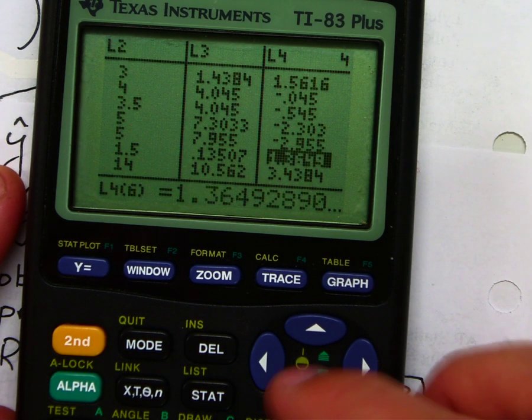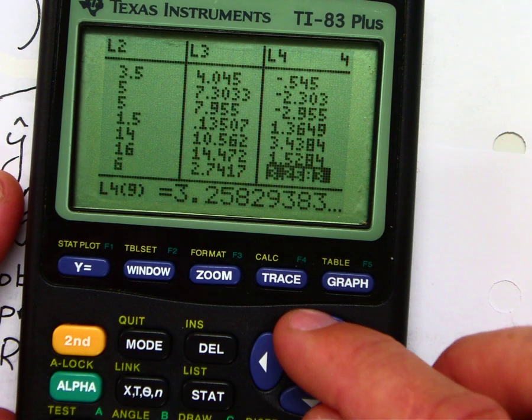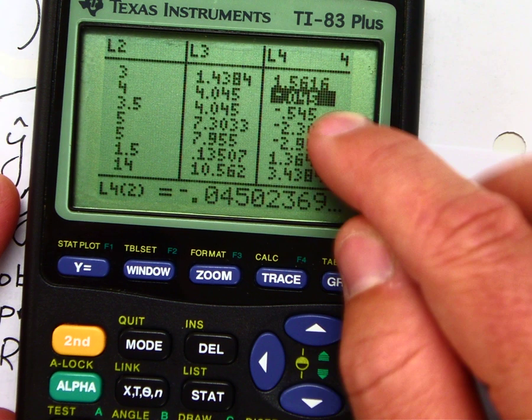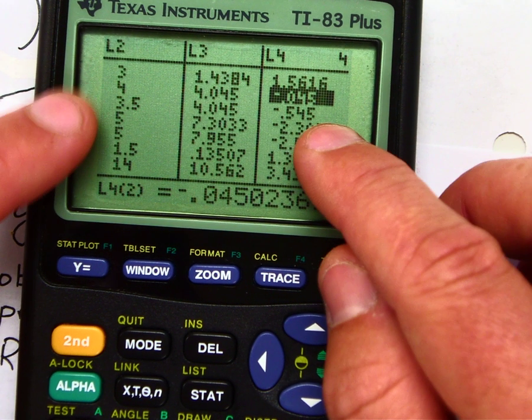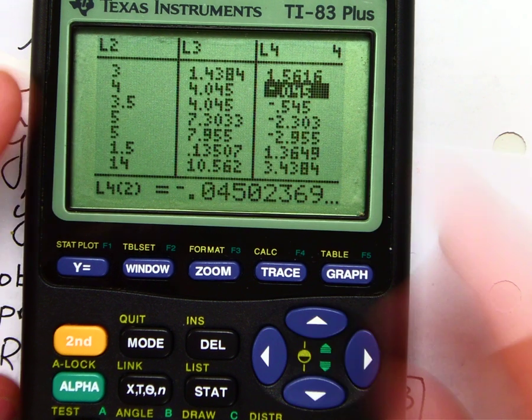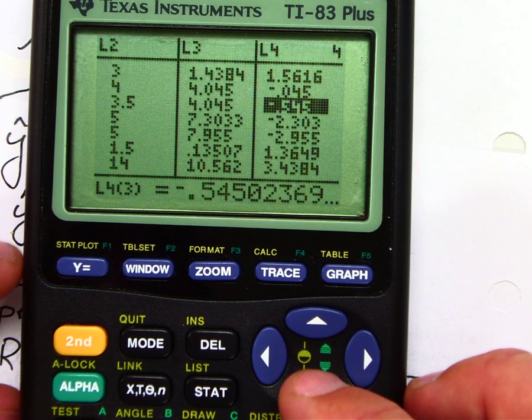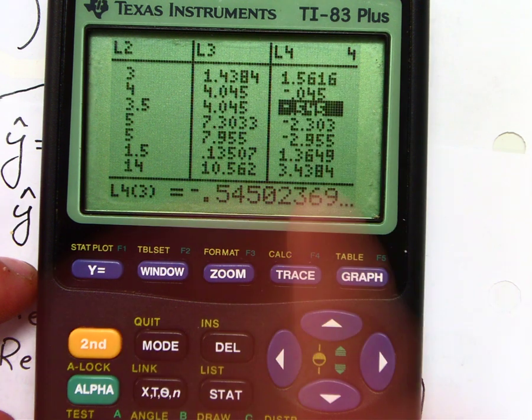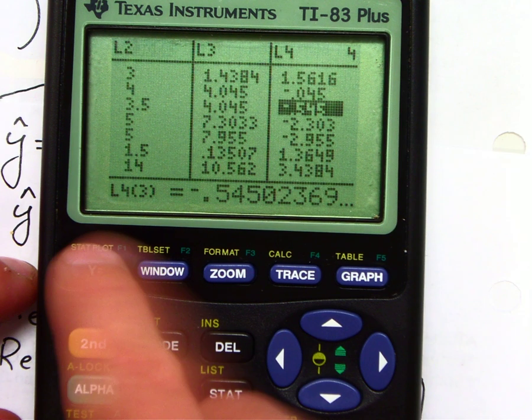Now, notice some are positive, some are negative, and this tells you how close to the regression line. In other words, these two points here are the closest to the regression line. They have a very small residual. Now, we're going to put this in a graph. Here we go. Now, keep in mind that list 4 is our residual points.